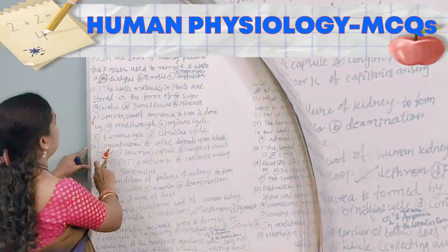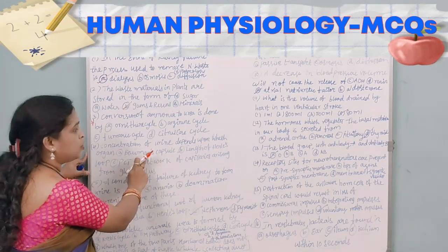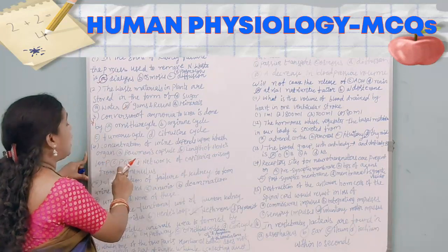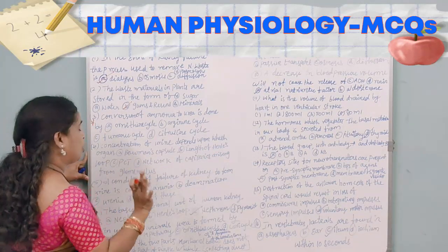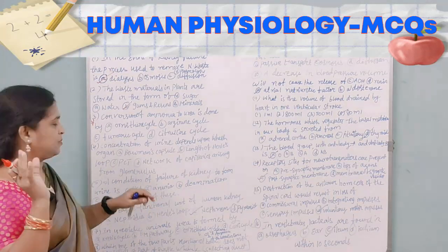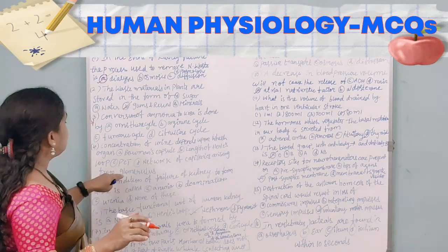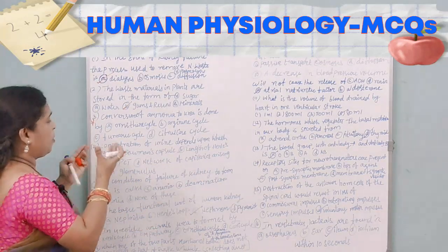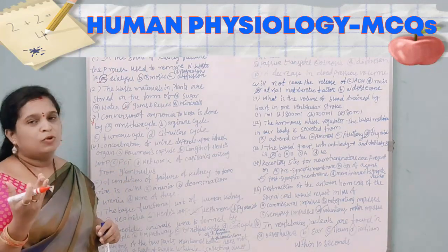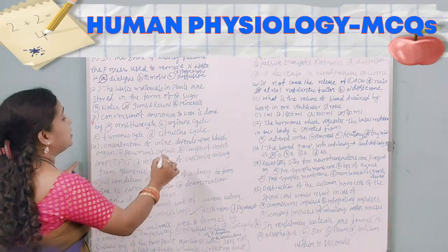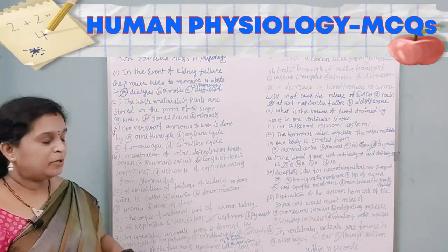The fourth question: concentration of urine depends upon which organ — Bowman's capsule, length of Henle's loop, PCT, or the network of capillaries arising from the glomerulus? Bowman's capsule is not the correct option. The network of capillaries from the glomerulus is present in the Bowman's capsule — also wrong. PCT (proximal convoluted tubule) is a wrong answer. The correct answer is the length of Henle's loop.